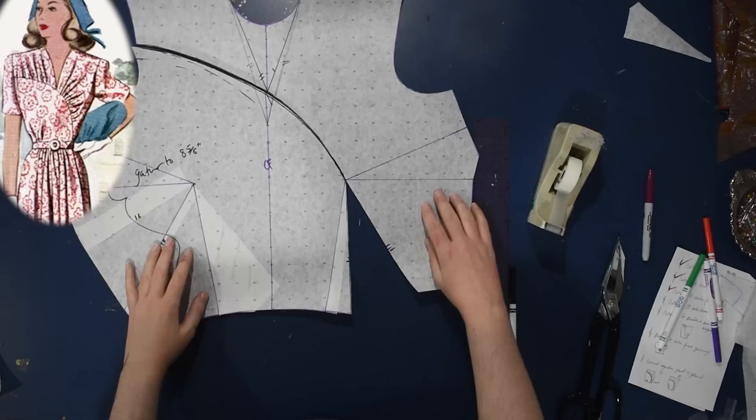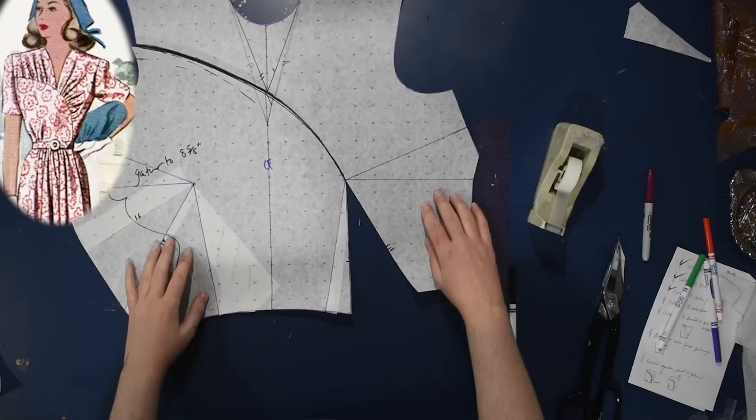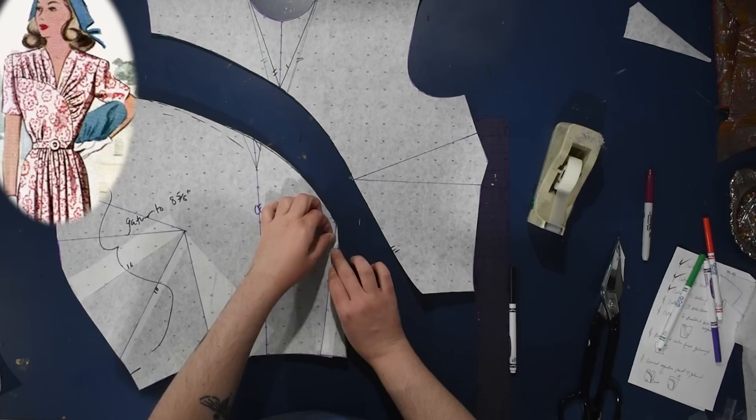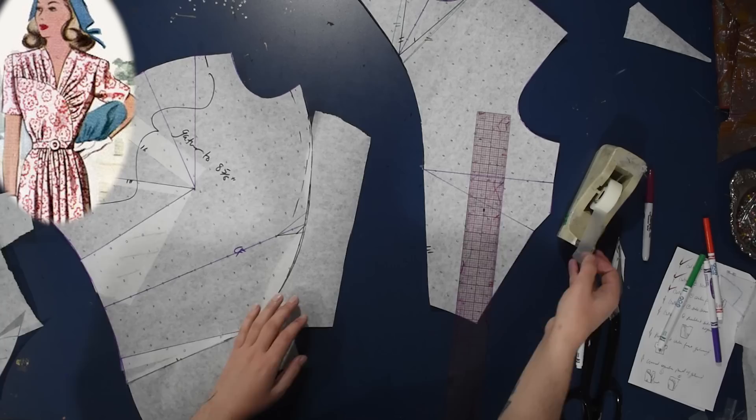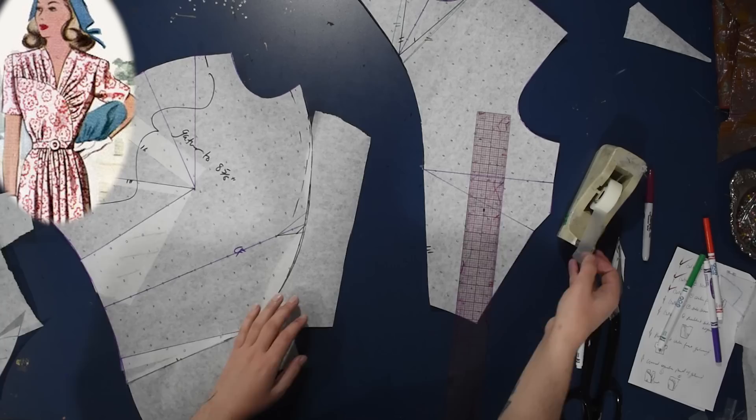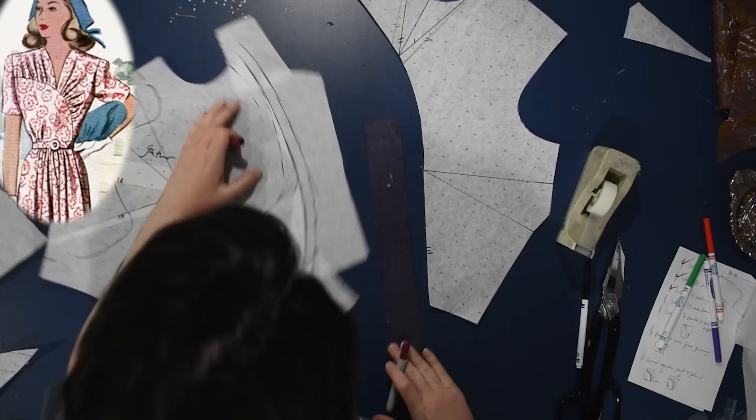So now my dart has been moved over, and you can see already we do not need that dart. This is just going to be a style line, just like most princess seams. Again, check out my princess seam video for an explanation of what's going on here. So now we have two pieces, and we need to add seam allowance along this style line that we just created, because of course I'm going to need to sew them back together. This isn't exactly a princess seam, it's just a style line, but to help us understand what's going on, I think it's useful to call it that.